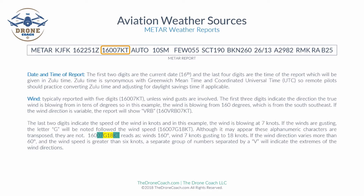The last two digits indicate the speed of the wind in knots. In this example the wind is blowing at seven knots. If the winds are gusting, a letter G would be noted followed by the gust speed — so it would read 16007G18KT. As highlighted here, you can see wind from 160 degrees at seven knots with the gusting value squeezed in between.